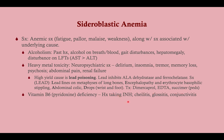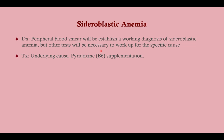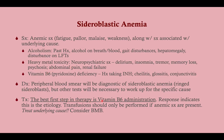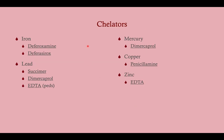For B6 deficiency, look for a history of isoniazid use and other B6 deficiency symptoms: cheilitis, glossitis, and conjunctivitis. Diagnosis is peripheral blood smear showing basophilic stippling, confirmed on Prussian blue stain. The best first step in therapy is vitamin B6 administration, which will maximize hemoglobin synthesis — the response will indicate the etiology. Transfusion should only be performed if anemic symptoms are present. The most important thing is to treat the underlying cause.